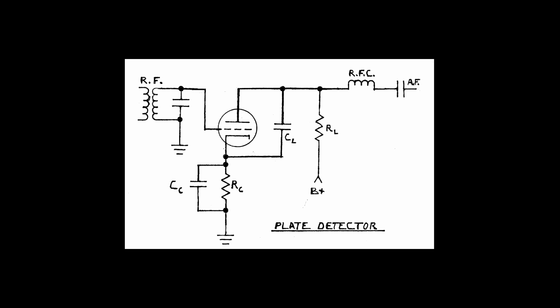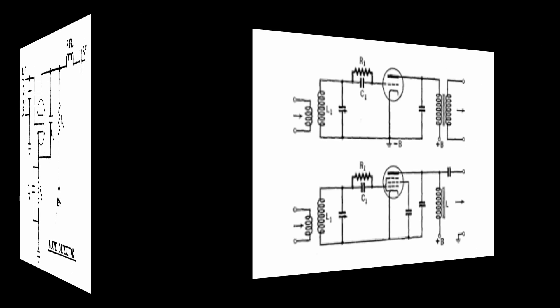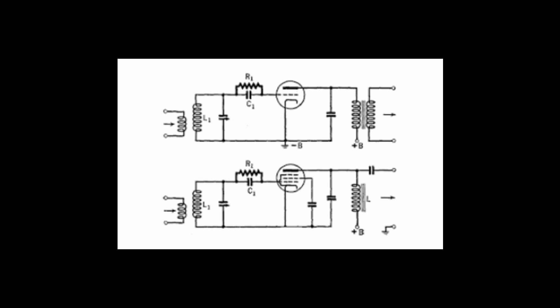At small input levels, the grid leak detector produces higher output amplitude than a simple crystal or plate detector. Higher gain tubes like high mu triodes and pentodes will give more recovered audio with the grid leak detector. In other words, it's going to be louder.